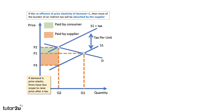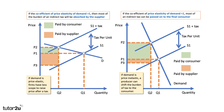When demand is highly price elastic, the producer has to absorb most of the tax — demand is price-sensitive, so firms have less scope to increase prices after a tax. Contrast that with a diagram where demand is more price inelastic, with a low coefficient of elasticity. In that situation a producer can shift the burden of the tax to the consumer.